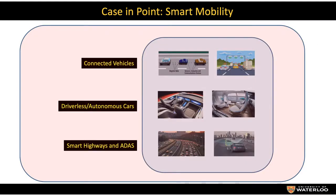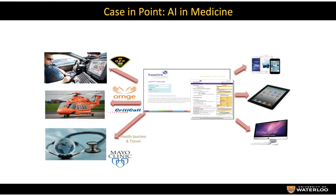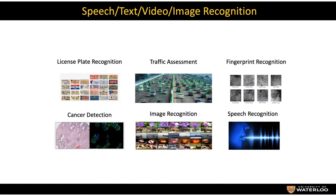Some applications in smart mobility include autonomous cars, connected systems, smart highways, and advanced ADAS systems, contributing to the concept of smart cities that is booming around the world, all powered by AI and machine learning. In the health sector, virtual care and telemedicine are seeing a huge boom, mostly powered by AI tools. We also see applications in traffic assessment, speech recognition, image recognition, cancer detection, and fingerprint recognition — almost every area is being touched by AI and machine learning.